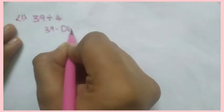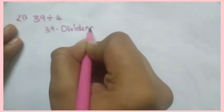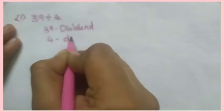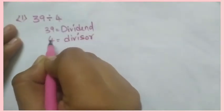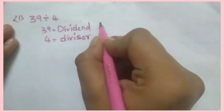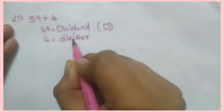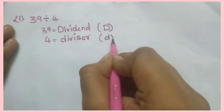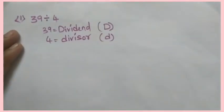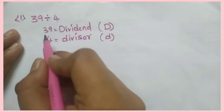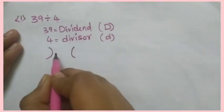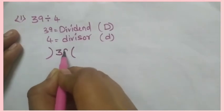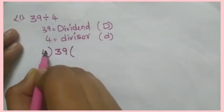Here 39 is the dividend and 4 is the divisor. We will represent the dividend with capital D and the divisor with small d. This is capital D and small d — this is the dividend and this is the divisor. We will do division like this: we will write the dividend in the middle and the divisor here.